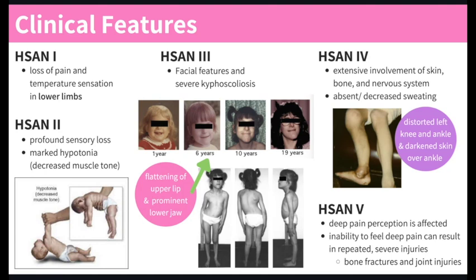For type 3, it shows specific facial features and severe kyphoscoliosis. In the first picture you can see as the girl gets older, her upper lip is flattening and her lower jawline becomes more prominent. The bottom picture shows what severe kyphoscoliosis looks like. For type 4, which mainly involves skin, bone, and nervous system, there is absent or greatly decreased sweating. The picture shows a distorted left knee and ankle, and darkened skin over the ankle. For type 5, the rarest, deep pain perception is severely affected — you have an inability to feel deep pain, which can mean a broken bone or injured joint could go unnoticed.